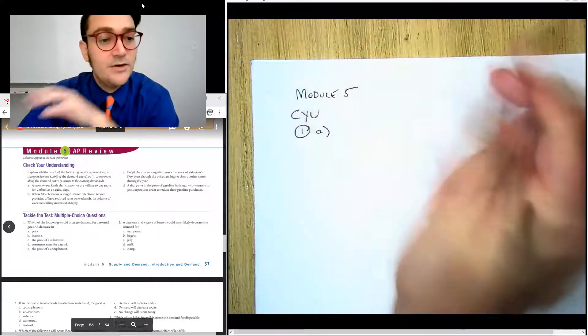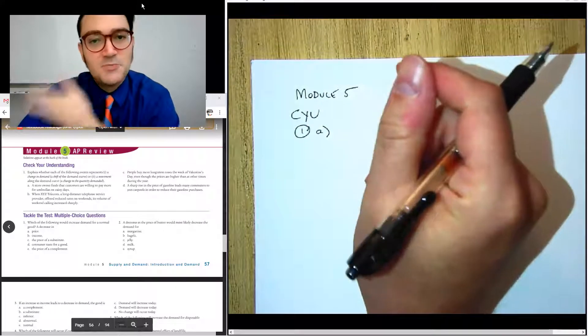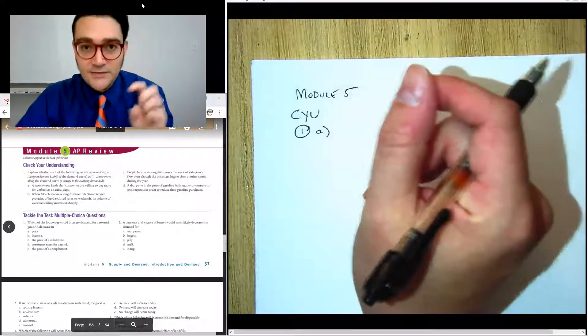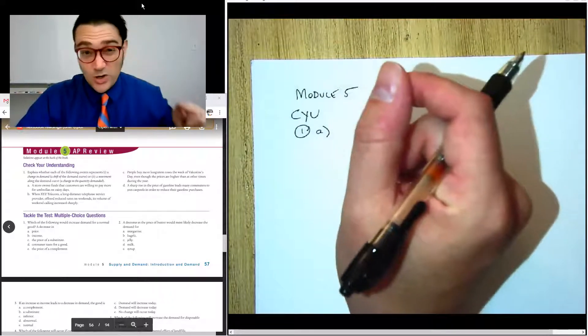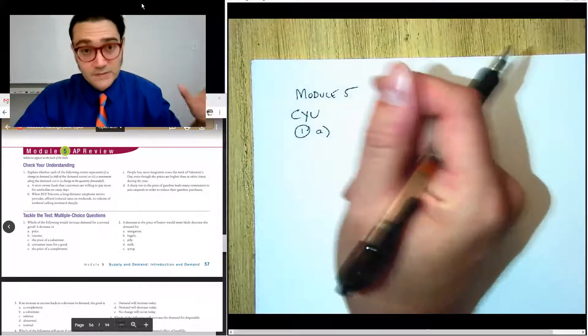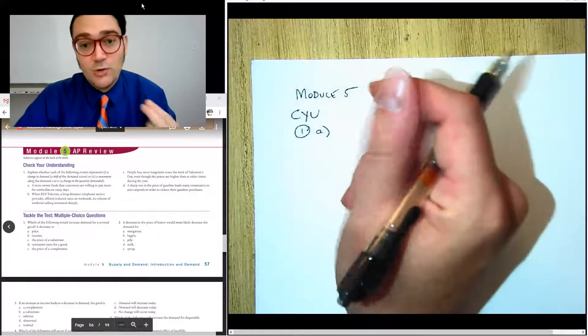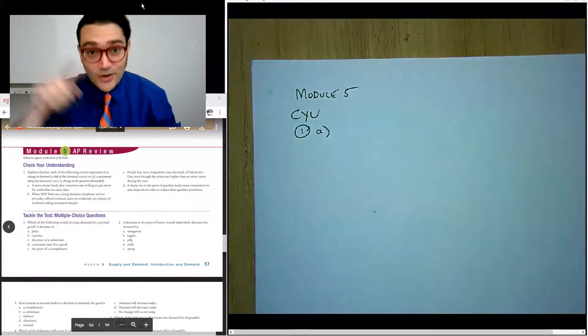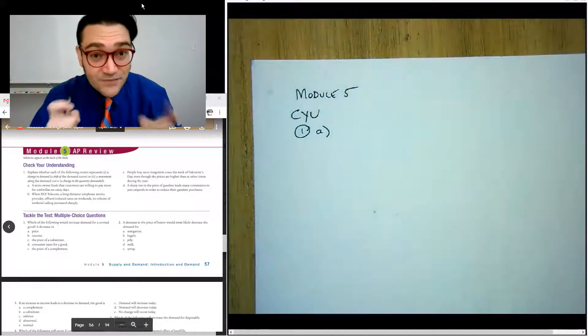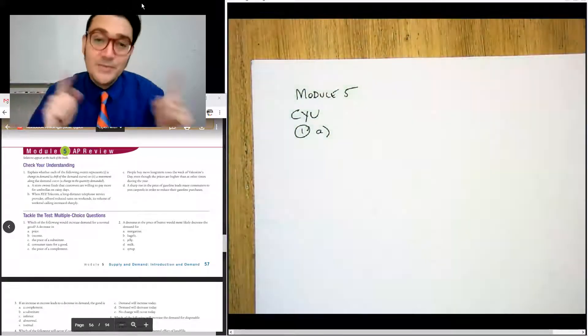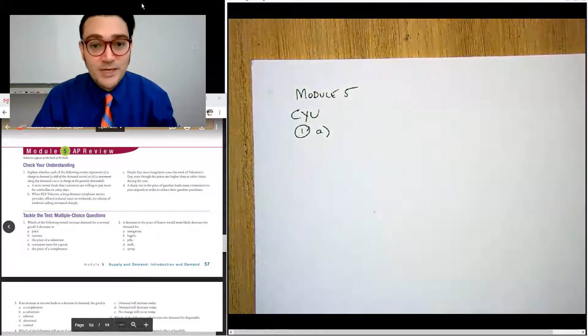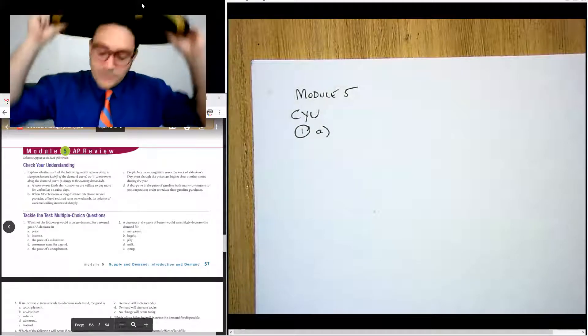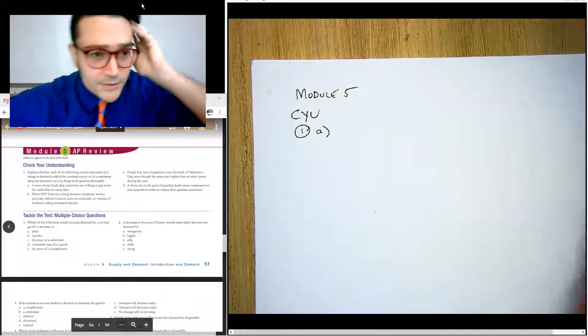So number one, A. And for all four of these, it says explain whether this is a change in demand or a change in quantity demanded. And they even give you the idea that is it a movement along the demand curve or does it move the demand curve? Again, a movement along is just changing quantity demanded. Now, the easiest thing to remember is that actually the only thing that will move along the demand curve is the price of the good because price doesn't shift the curve, but it does cause you to move along the demand curve. Price doesn't shift the curve.